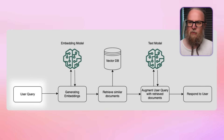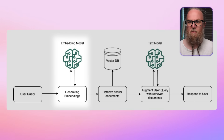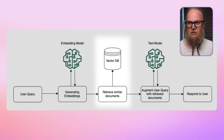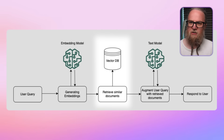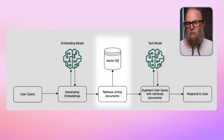Next, we have user query processing. This is when a user submits a query — the same embedding model converts this query text into a vector representation. After we've done this, we go into context retrieval, where the system compares the query vector against indexed document vectors.